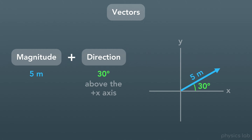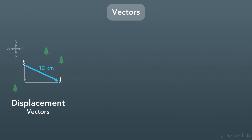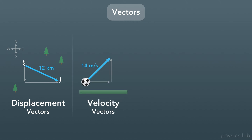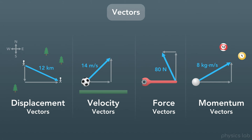We use vectors to represent a lot of different things in physics. We might deal with vectors that represent the displacement of an object, or the velocity of an object that's moving. We'll use force vectors all of the time when we draw the free body diagram for an object, or when we calculate the torque around some pivot point. And we can even use vectors to represent the momentum of objects when we're working with collisions and the conservation of momentum.